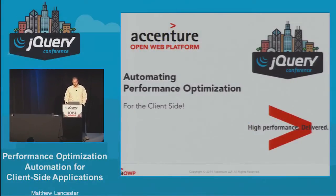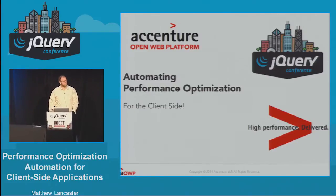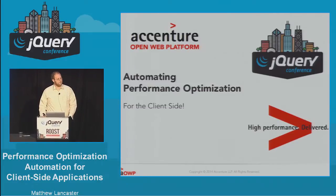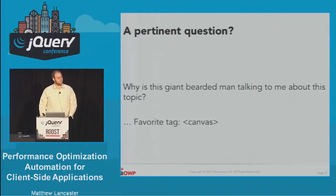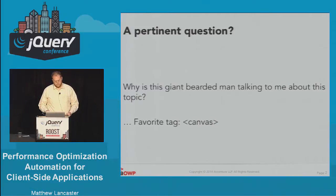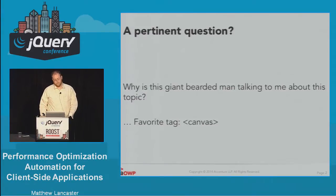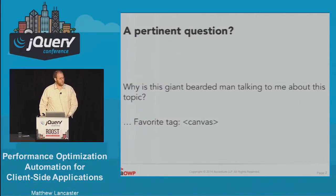I am Matt Lancaster, and I'm going to talk to you today about automating performance optimization. It's a topic near and dear to my heart. I am a senior technology architect and executive within Accenture's emerging technologies practice, where I lead a practice area called Lightweight Architectures. Specifically, I own a capability group called the Accenture Open Web Platform that I started, and I currently lead a team of about 50 people in the United States and another few hundred people offshore.